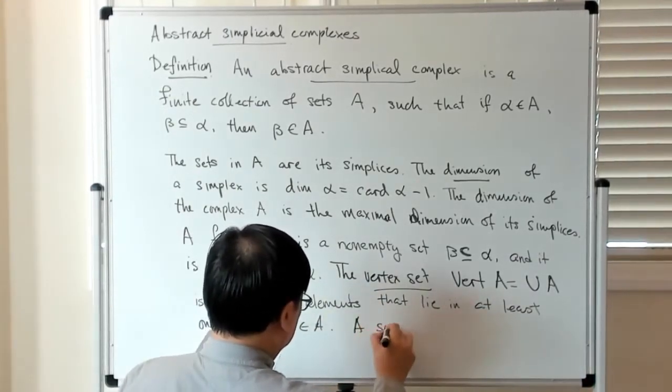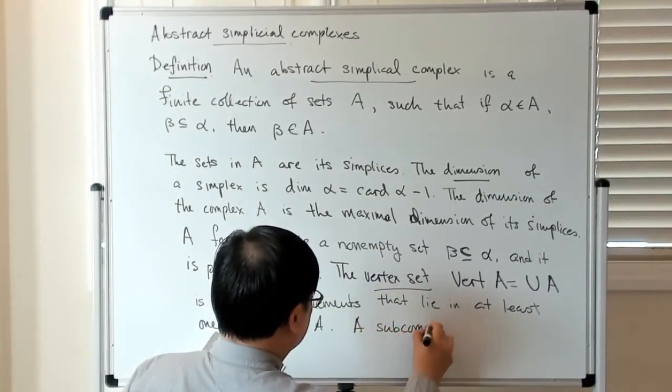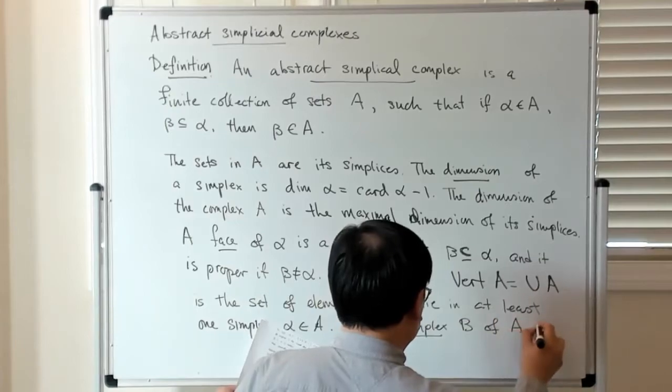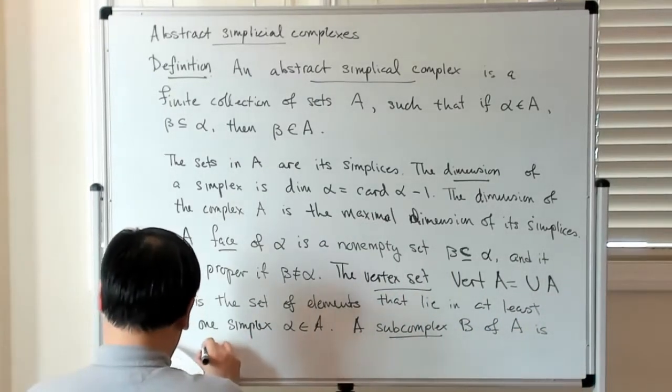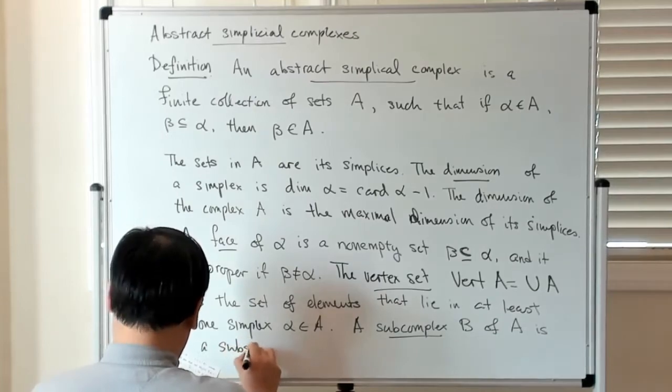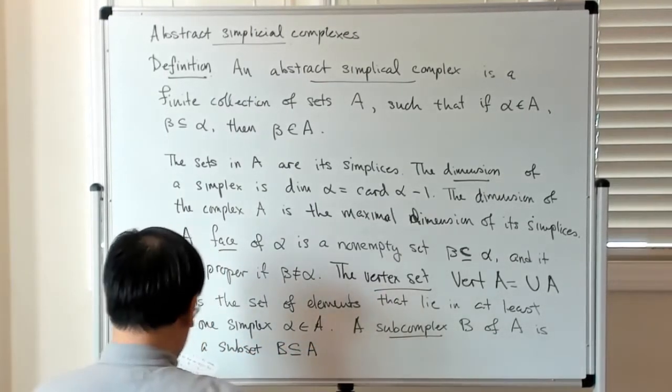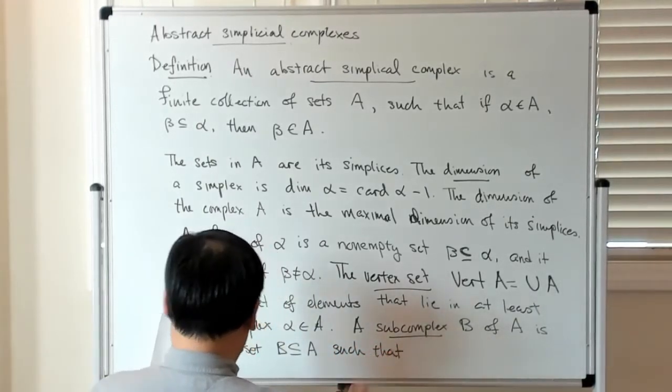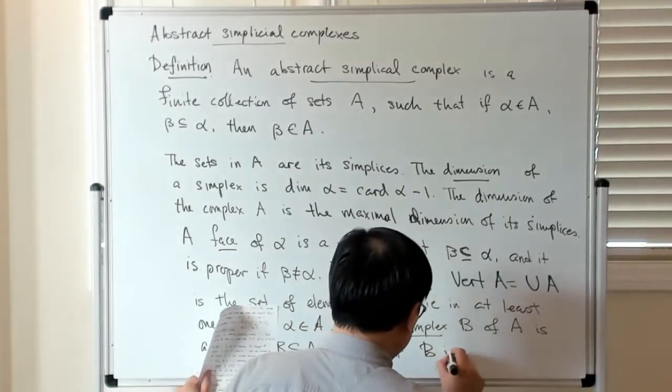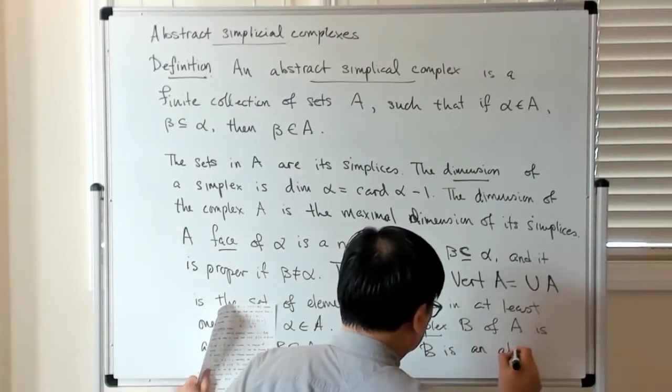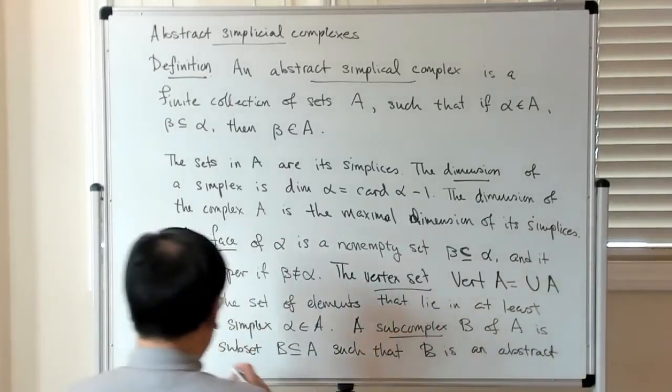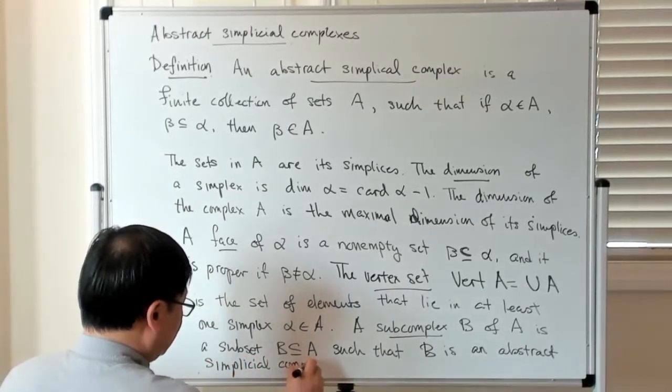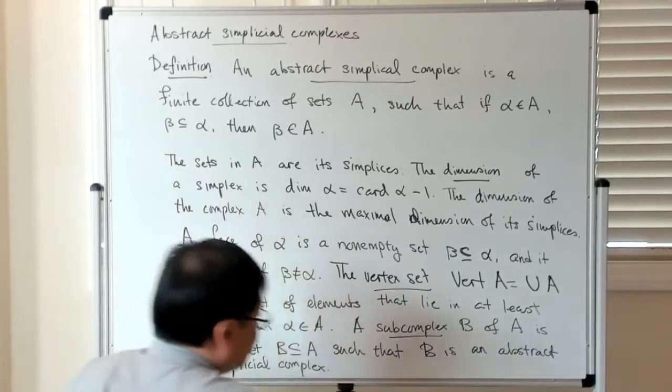A sub-complex B of A is a sub-collection or subset B contained in A such that B is again an abstract simplicial complex, which is to say that it is closed under taking subsets.